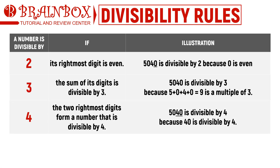The divisibility rule for 4 can be used by focusing on the last two digits of a number. For 5040, the two rightmost digits give us 40. Since 40 is divisible by 4, we can say 5040 is divisible by 4. This method works because 100 is a multiple of 4, so everything beyond the hundreds digit can be divided cleanly.